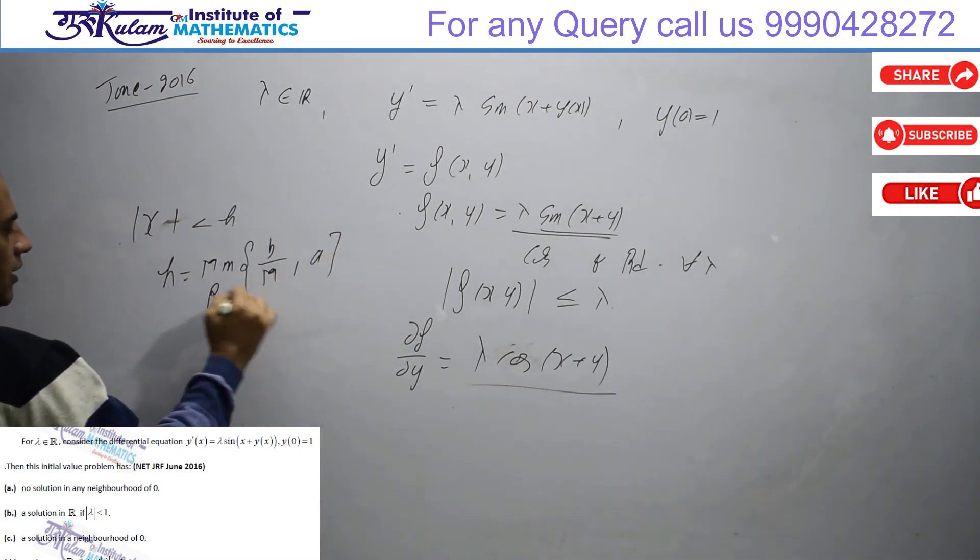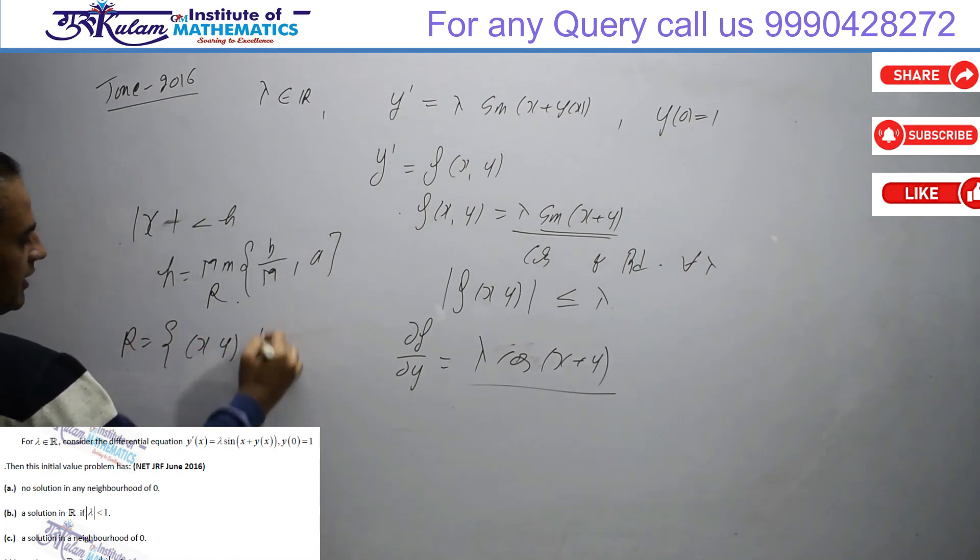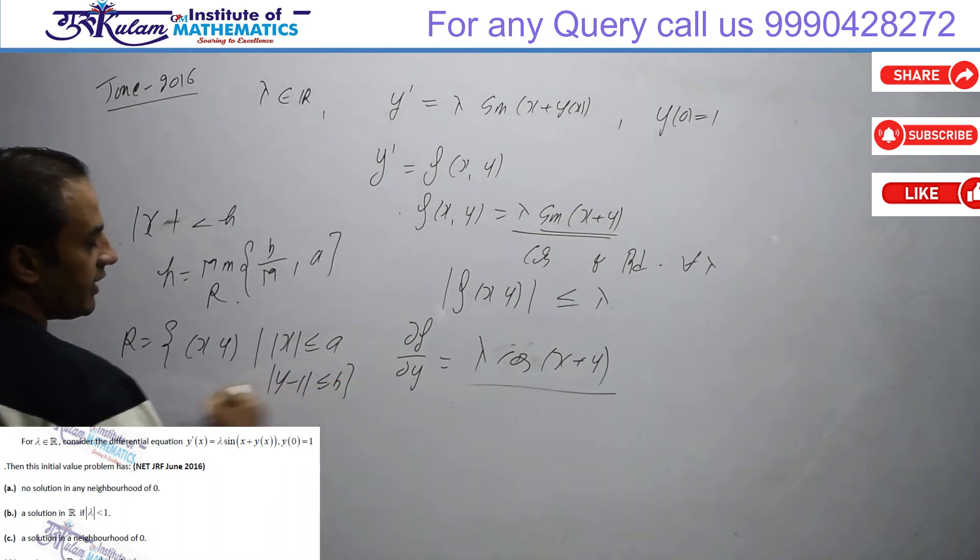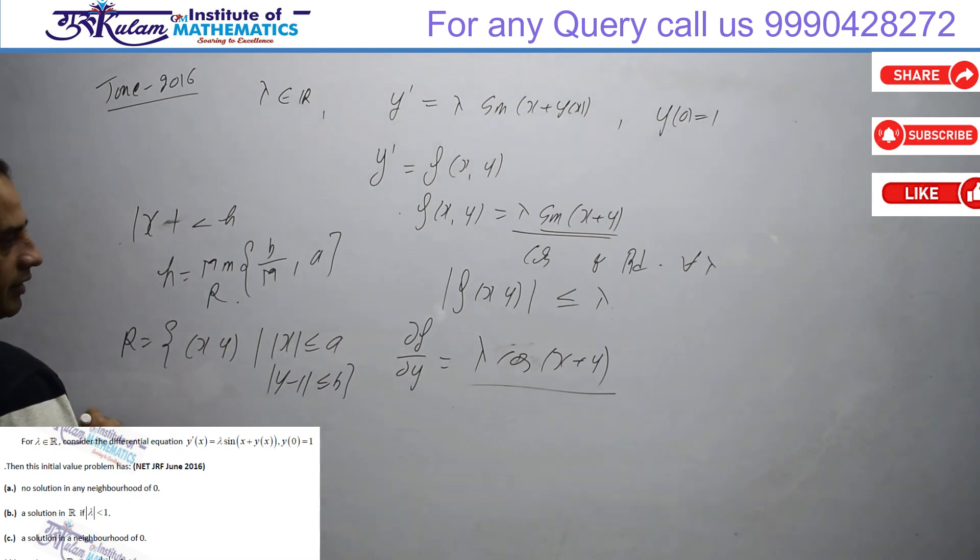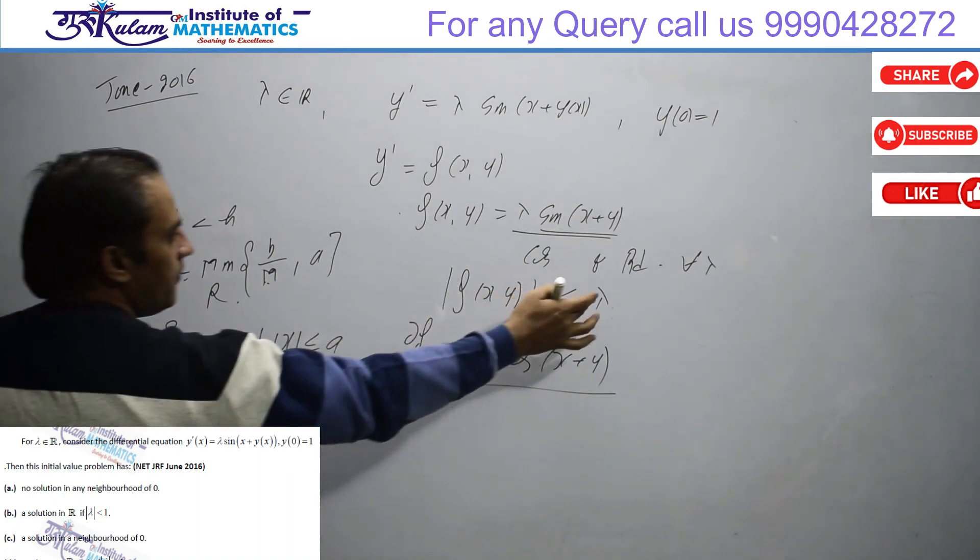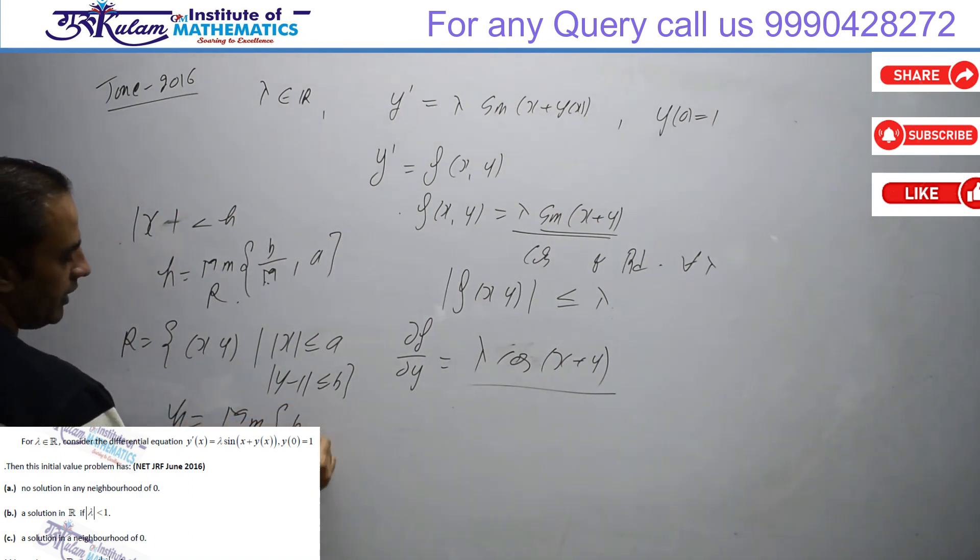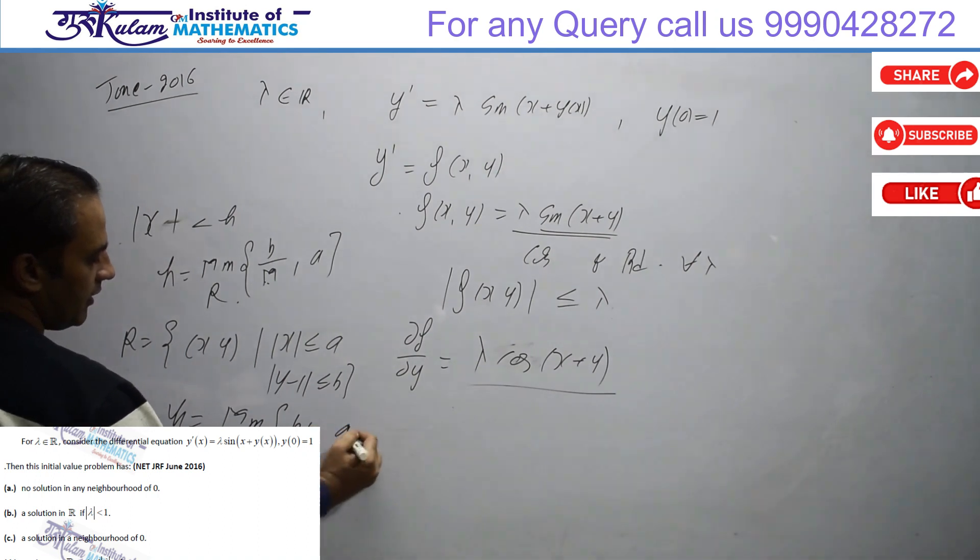On rectangle R defined as (x,y) such that |x| ≤ a and |y - 1| ≤ b, where a and b are arbitrary. Here m is lambda. For any value of lambda, h will be minimum of b/lambda and a.